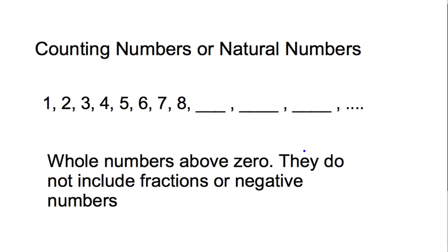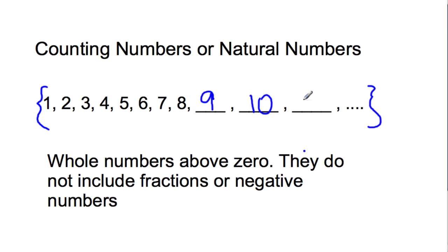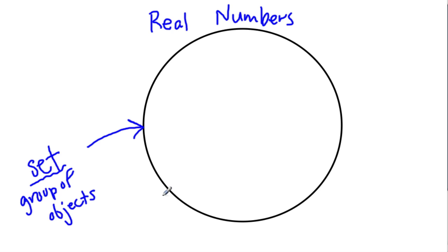Our first type of real number is the one you learn first in school — they're called counting numbers or natural numbers. Usually you'll see them written with brackets to indicate a set or group. This set goes from one up to two and so forth, up by ones: eight, nine, ten, eleven — not ten-point-five, but eleven. Counting numbers are whole numbers above zero; they do not include fractions or negative numbers. We will refer to natural numbers as starting at one, and they are our first group within the real numbers.